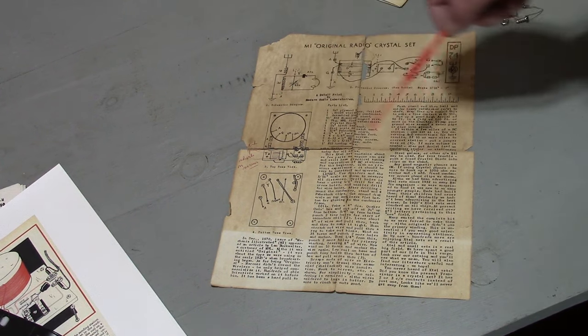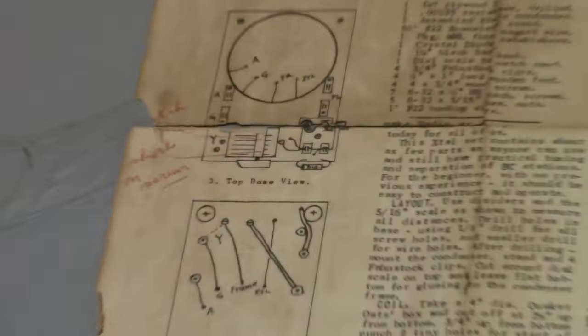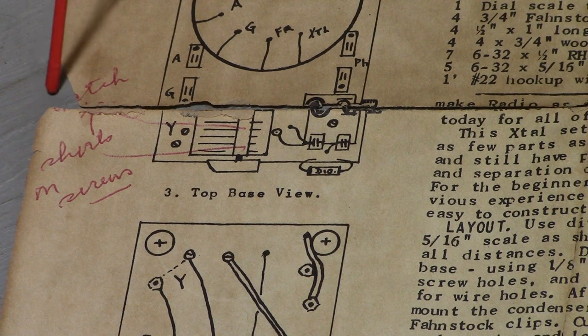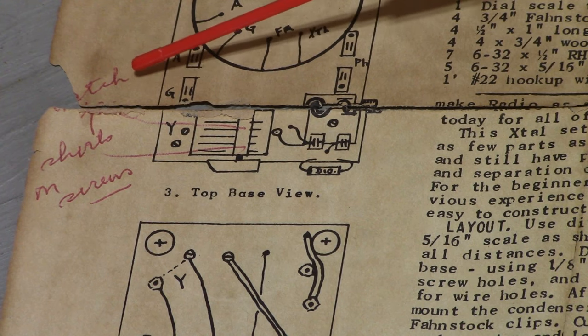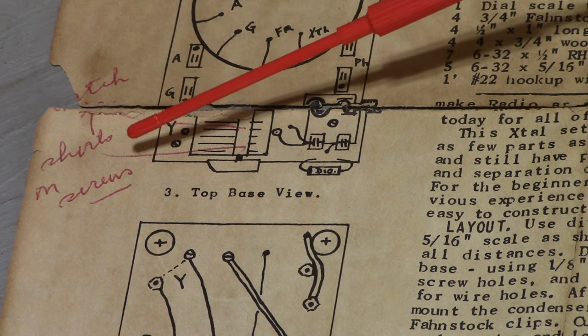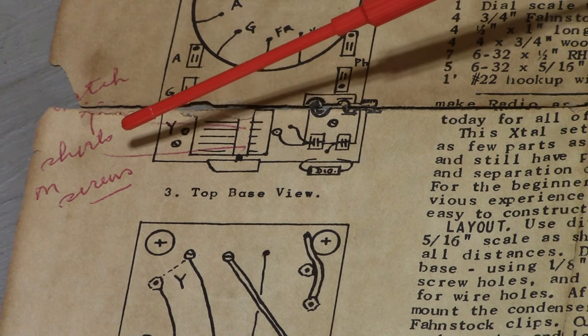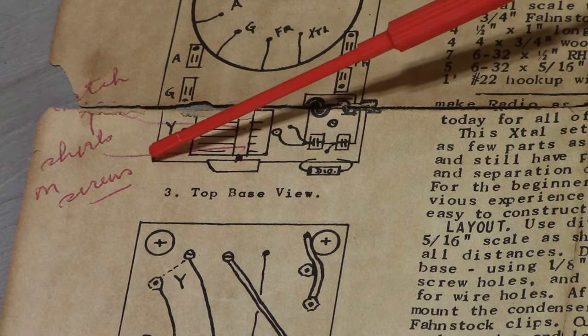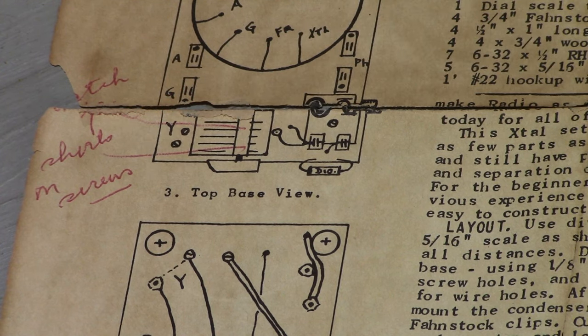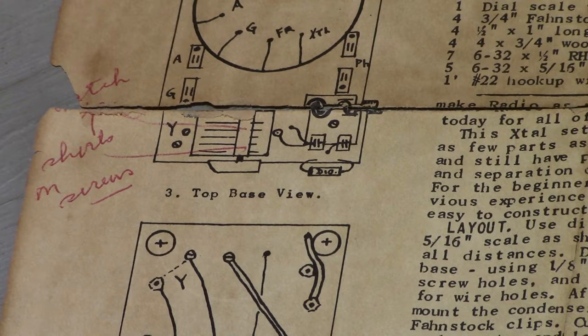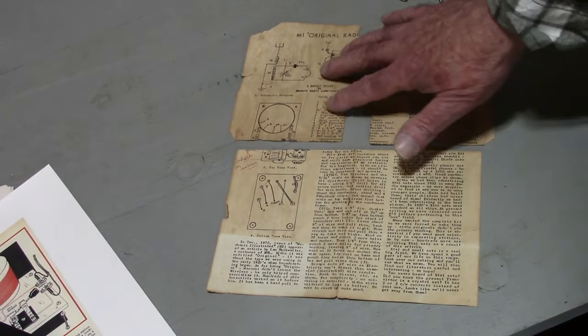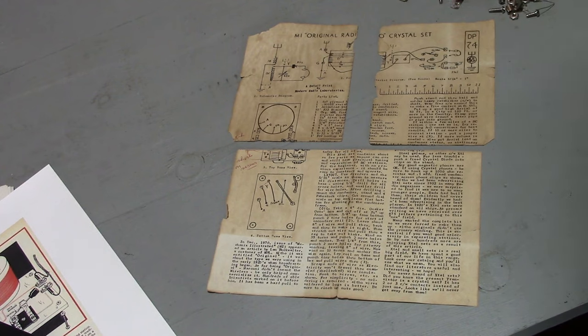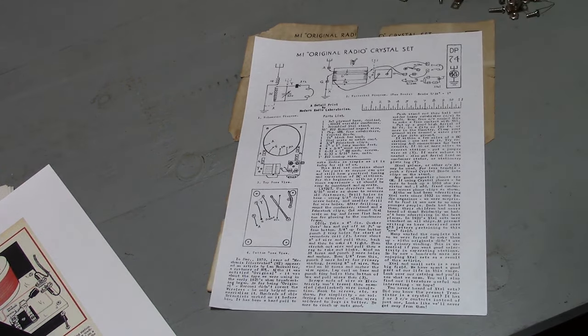Here are the instructions - the MI for Mechanics Illustrated original radio crystal set, Detail print number 74. Detail print 74 was the last publication made by Modern Radio Laboratories. Over here Elmer's written something but I can't make it out. There's a piece missing - I think it says attach, shorts, screws. Elmer's handwriting is hard to comprehend sometimes. This detailed print is now in three pieces, but they're readily available on the internet so I just printed out a new one.